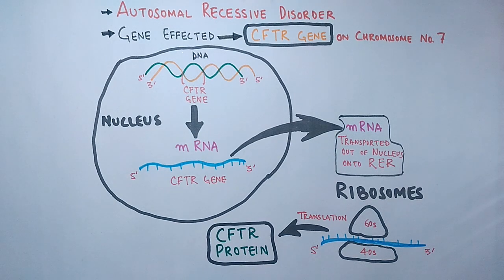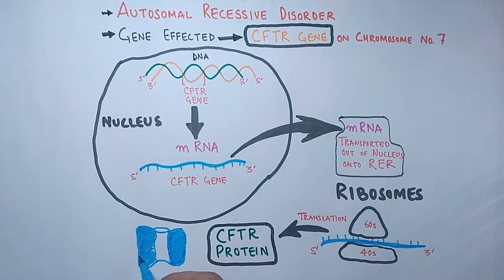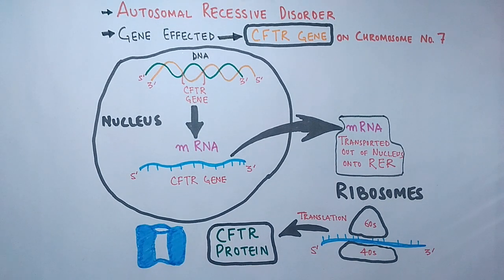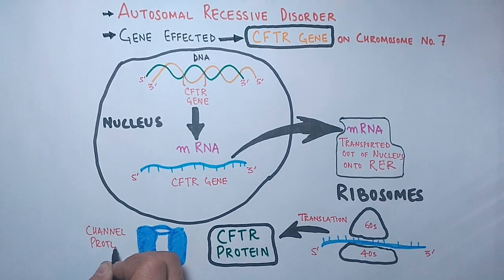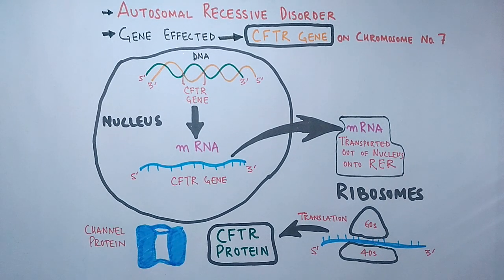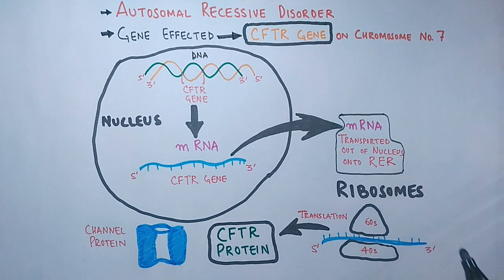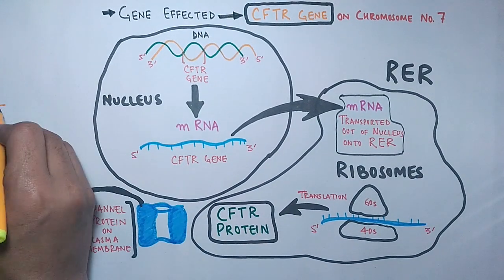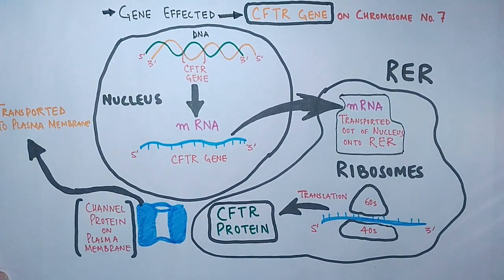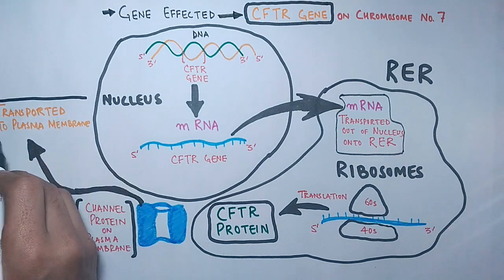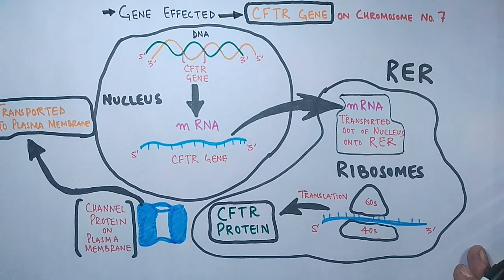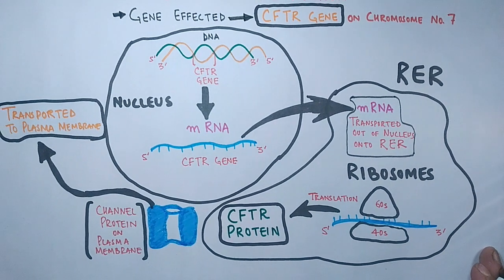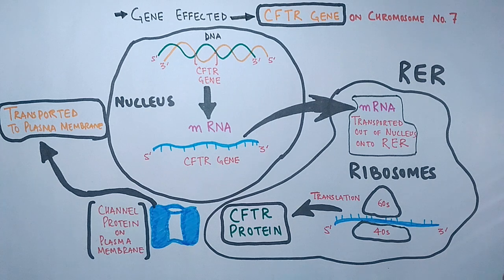Through this translation process we finally get the CFTR protein. This CFTR protein is a chloride channel protein located on the plasma membrane of epithelial cells. From its site of synthesis at the RER, it is transported to the plasma membrane of the cell where it acts as a channel protein.